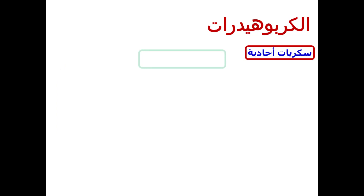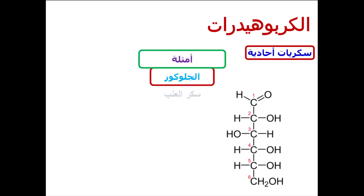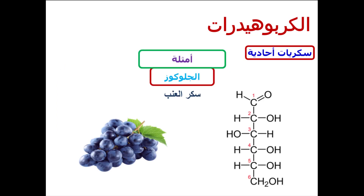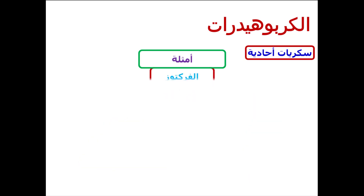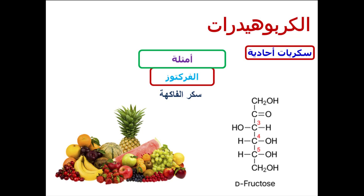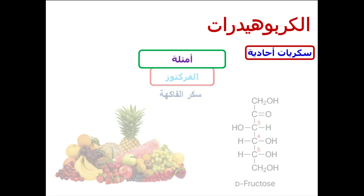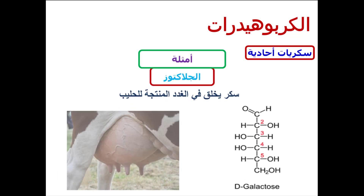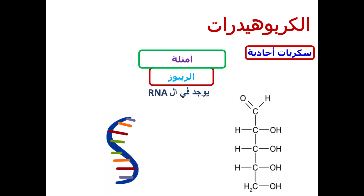أمثلة السكريات الأحادية: الجلوكوز وهو سكر العنب، الفركتوز وهو سكر الفاكهة، الجالاكتوز الذي يتكون في الغدد المنتجة للحليب، والريبوز الذي يدخل في تركيب جزيء RNA وهو عبارة عن خمس ذرات كربون.